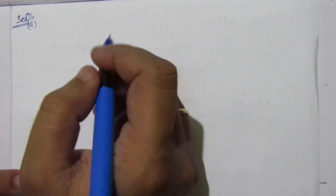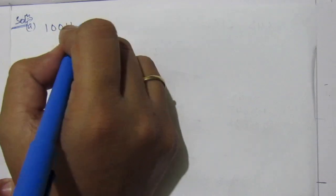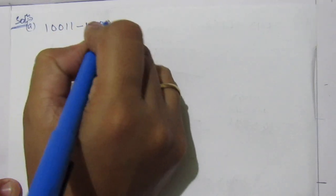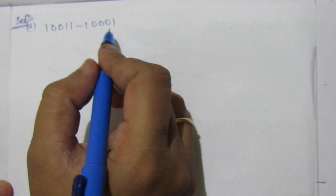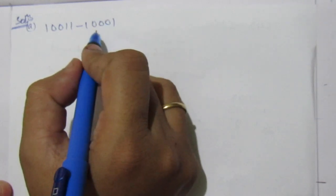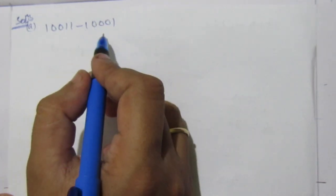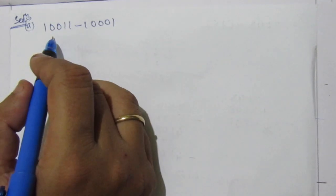The first problem is: 10011 minus 10001. For finding out this difference, you have to find out the 2's complement of the subtrahend, then add the 2's complement to the minuend, and then you will get the difference.